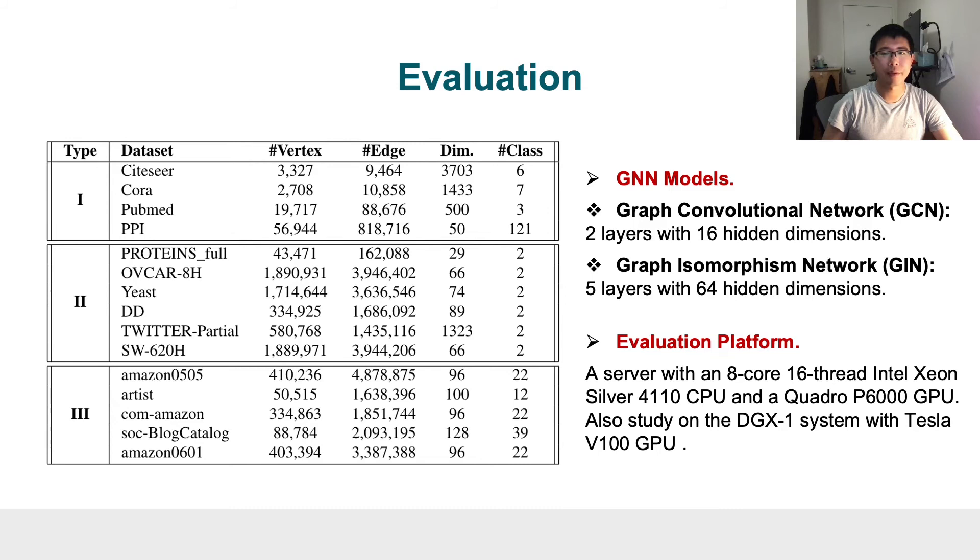Now, let's take a look at our evaluation. For the GNN model, we consider two typical models: the first one is graph convolutional networks, and the second one is graph isomorphism network. For datasets, we consider three typical datasets to cover different real-world GNN application settings. For evaluation platform, we consider a server with Xeon CPU and Quadro GPU, and we also conduct a study on DGX-1 system.